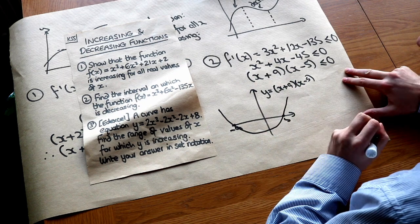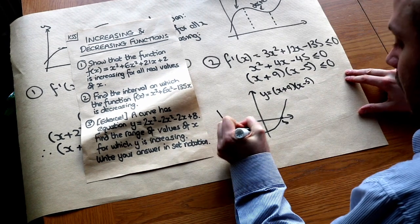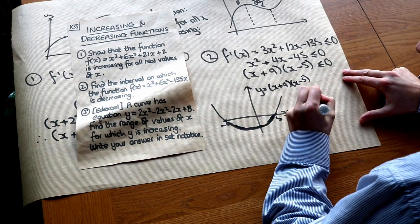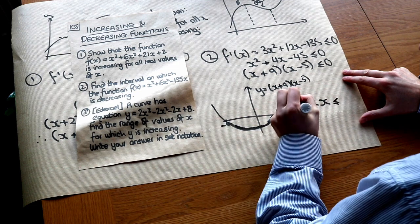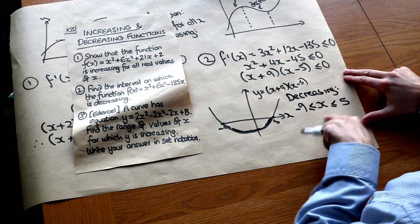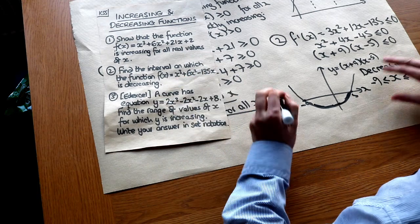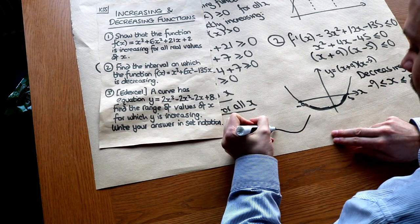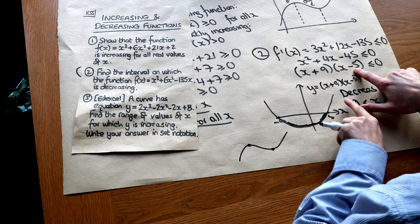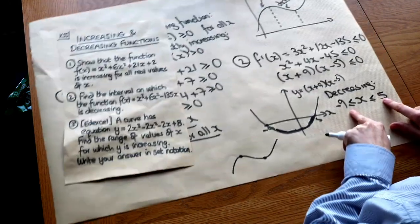To solve this we sketch y = (x + 9)(x − 5): the roots are x = 5 and x = −9, and it's a positive quadratic. We're interested where the y value is less than or equal to zero, which is between the roots. So x is between −9 and 5. This makes sense when we sketch the cubic — it's positive, so it decreases in the middle section between the two turning points at −9 and 5.